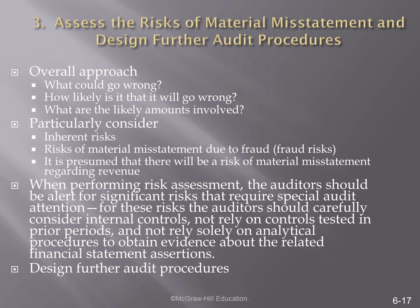Our assessment of material misstatement is going to be based on the materiality measurements that we established in the planning phase of the audit. In the planning phase we're asking ourselves what could go wrong and what additional steps do we need to implement to mitigate the risk that we've identified. When performing the risk assessment the auditor should be alert for significant risks that require special audit attention. For these risks the auditor should carefully consider internal controls, not relying on testing from the prior period nor on analytical procedures to obtain evidence about these related financial statement assertions.